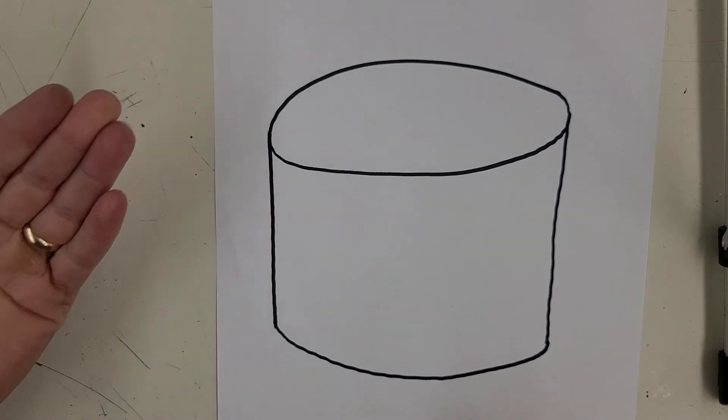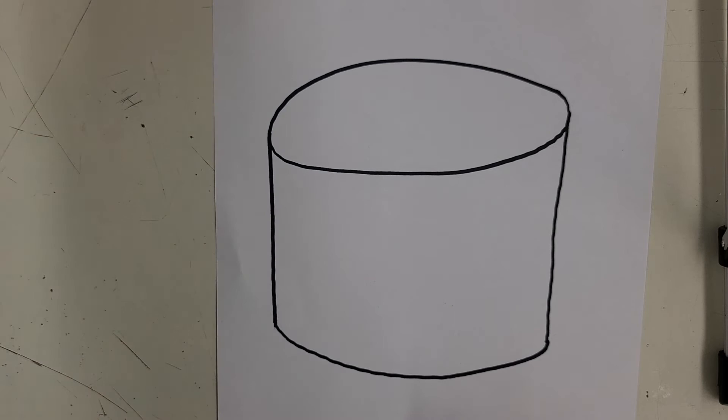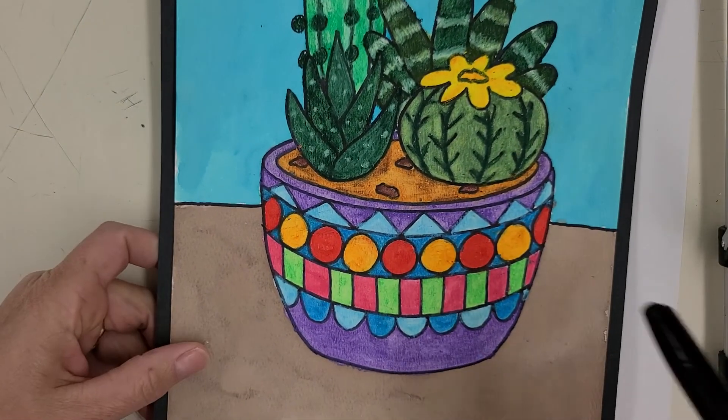Now, on the pot, to take it one step further, you notice I have this rim right in here, which makes the pot look like it has thickness.